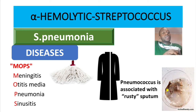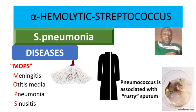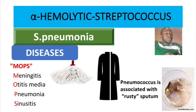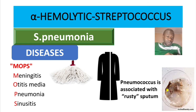Streptococcus pneumoniae has two important virulence factors. The first is the capsule, which I already mentioned. You need to know that some strains do not have a capsule — if it doesn't have a capsule, it means it's not virulent. No capsule, no virulence.